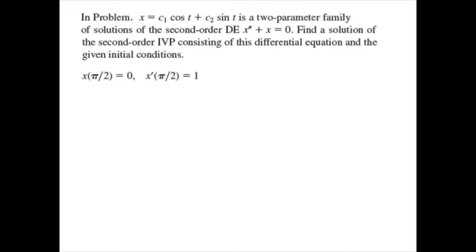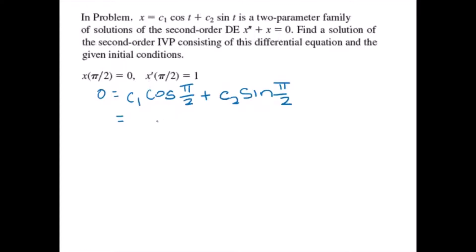Here we're going to use substitution for the given initial conditions. For the first equation, we're going to use the first initial condition, substituting zero for x and pi over 2 for t. The cosine of pi over 2 is zero, so the first term reduces to zero. The sine of pi over 2 is 1, and therefore c2 must be equal to zero.